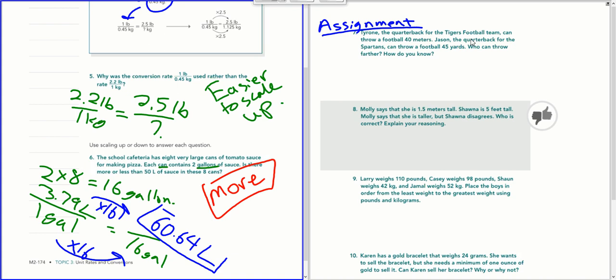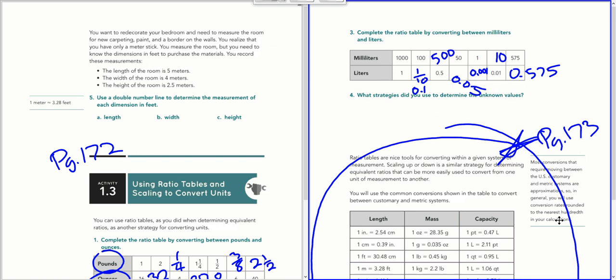Here it says Tyrone is a quarterback for the Tigers football team. He can throw a football 40 meters. Jason, the quarterback for the Spartans, can throw a football 45 yards. Now, it's going to be hard to compare these because we're talking about meters and yards. So we need to convert one to the other. So it doesn't matter if we convert this to yards or we convert this to meters.